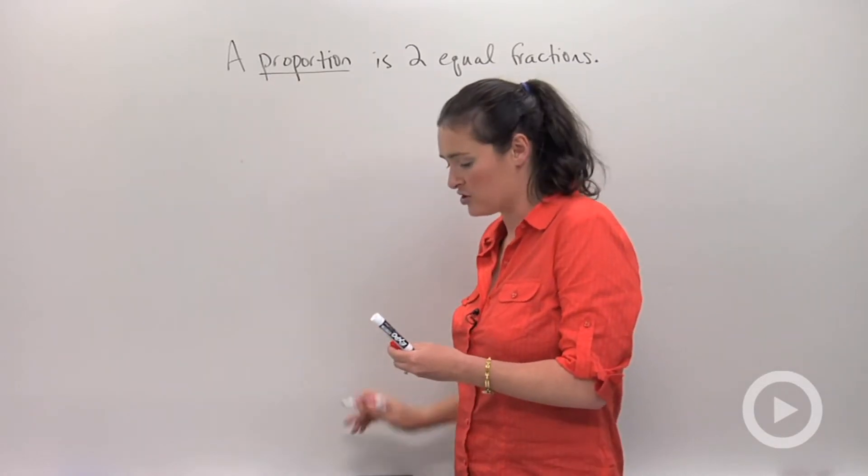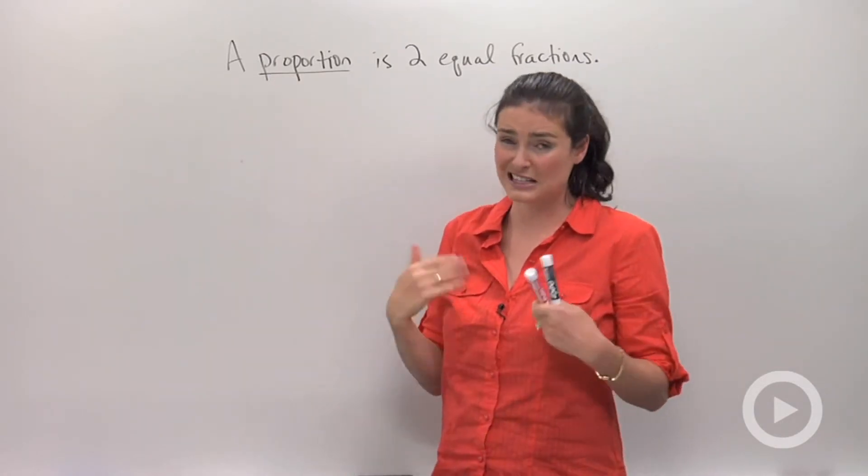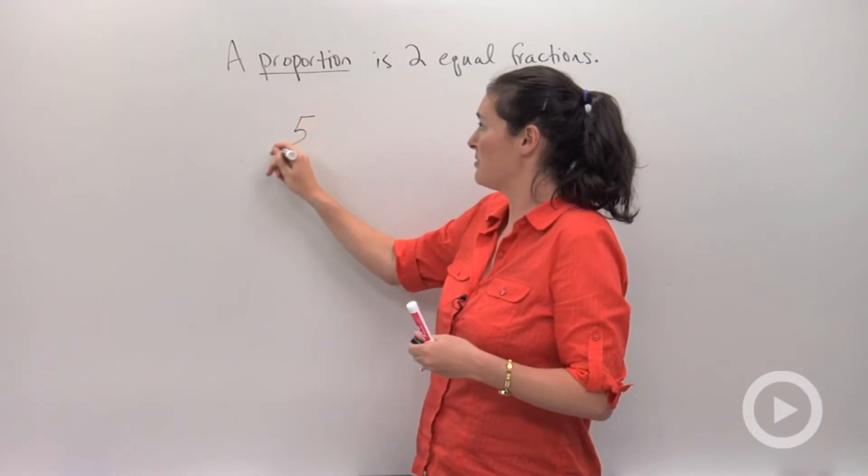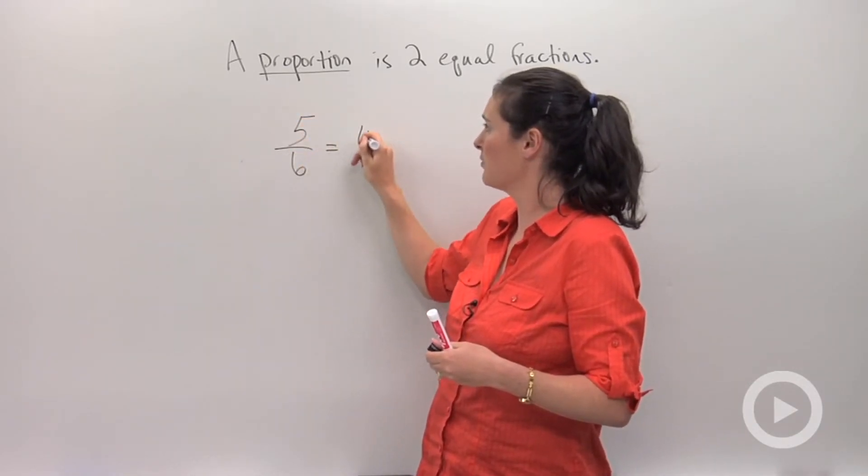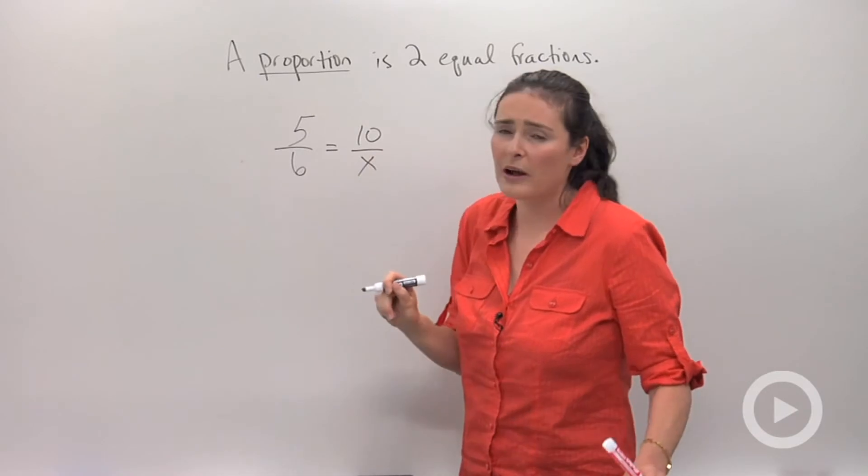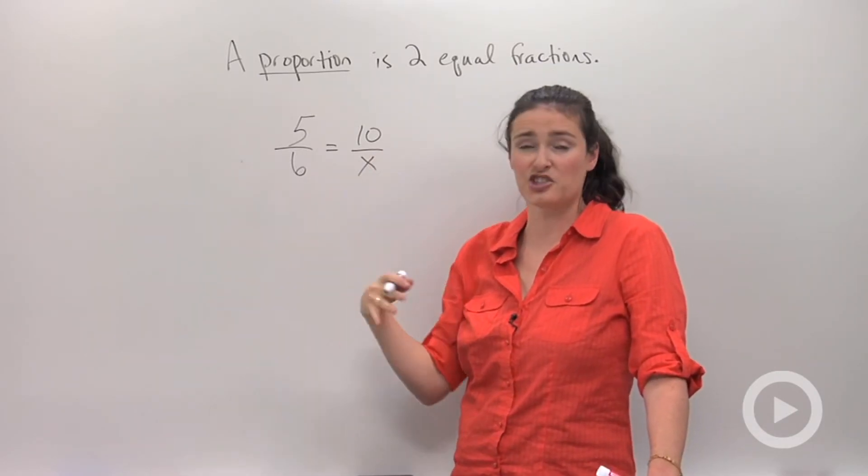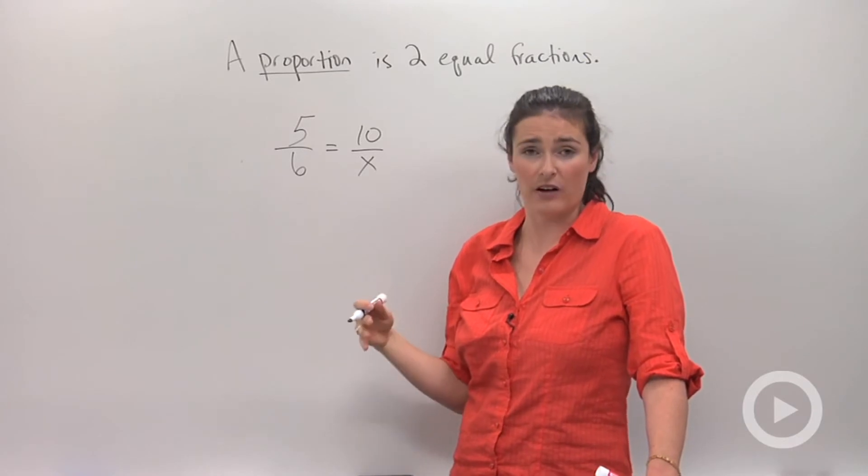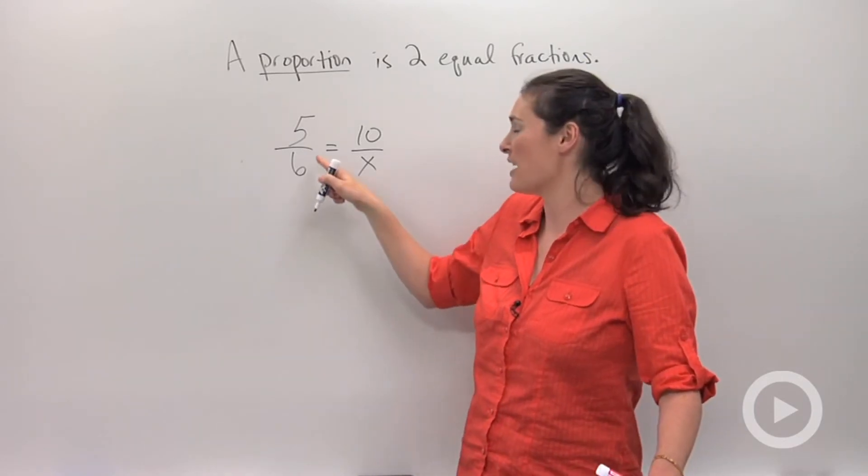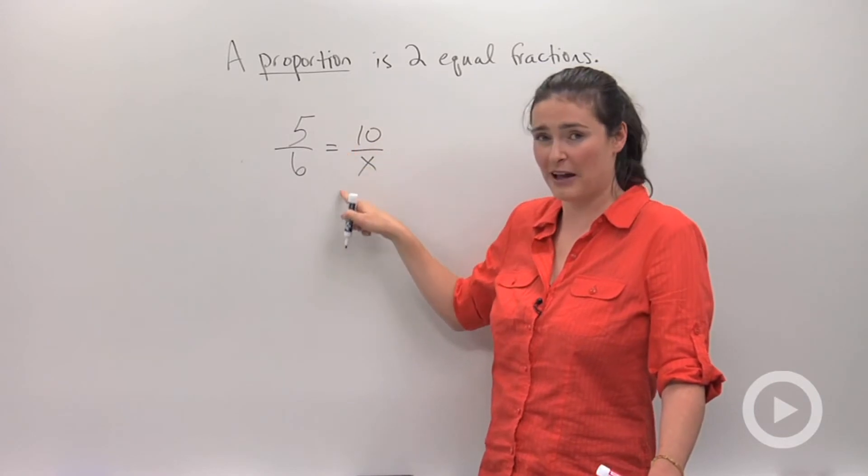The last method I want to show you is the one that makes most sense to me mathematically. Let me write that same problem. What I would want to do is try to undo what's happening to x, just like I would with solving an equation. So right now I have 10 divided by x.